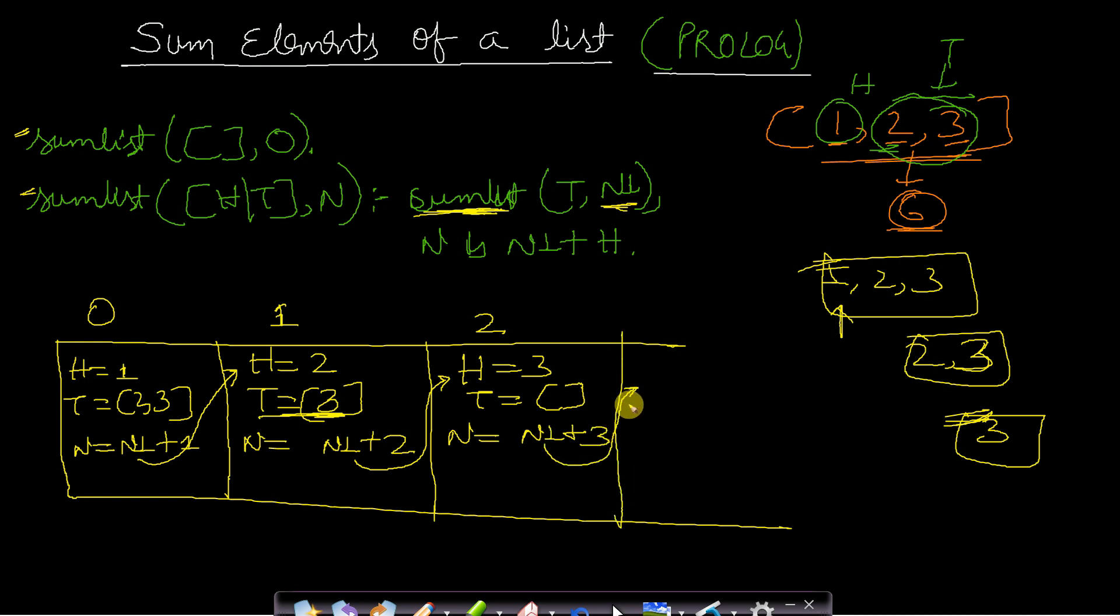Again a recursive call will be made—this is the third recursive call. In this case, we will pass an empty list. In our first line, this is the termination condition. If we have no element in the list, then 0 will be returned. So this will return 0.